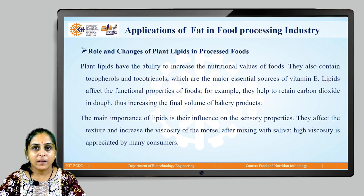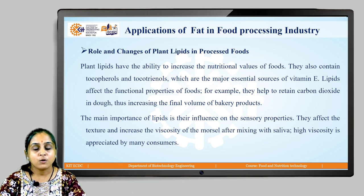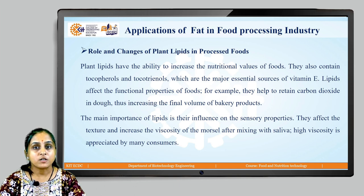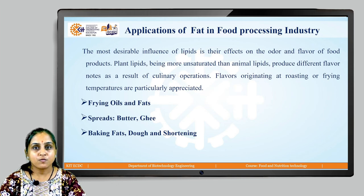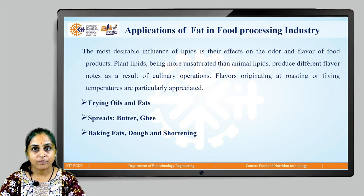Regarding the role and changes of plant lipids in processed foods: plant lipids have the ability to increase the nutritional value of foods. They also contain tocopherols and tocotrienols, which are major essential sources of vitamin E. These lipids affect the functional properties of foods — for example, they help retain carbon dioxide in dough, thus increasing the volume of bakery products. The most desirable influence of lipids is their effect on the odor and flavor of food products. Plant lipids, being more unsaturated than animal lipids, produce different flavors as a result of culinary operations, and flavors originating at roasting or frying temperatures are particularly appreciated.